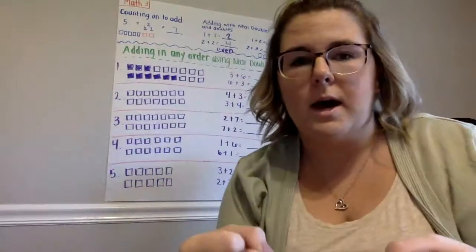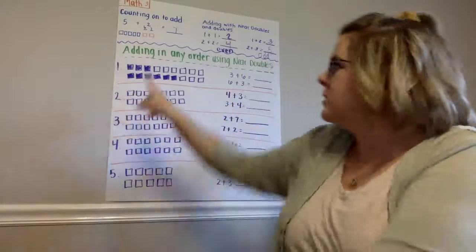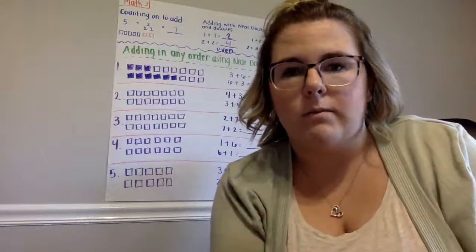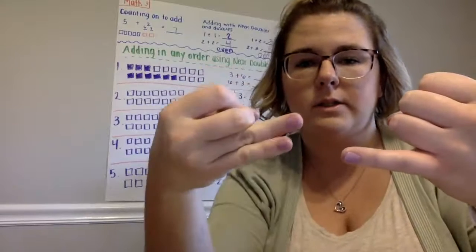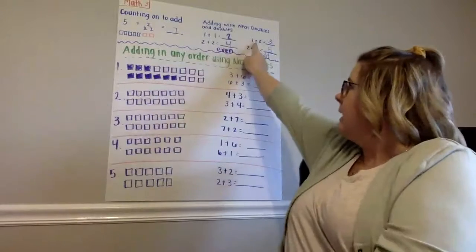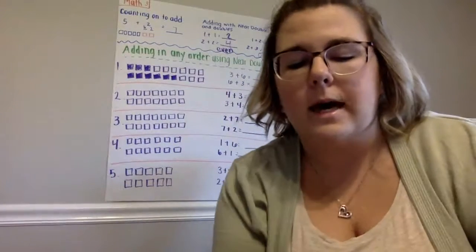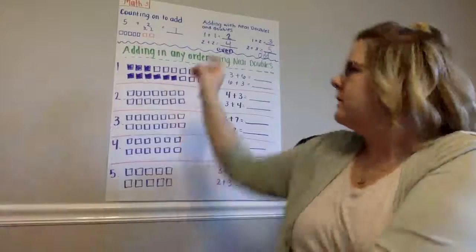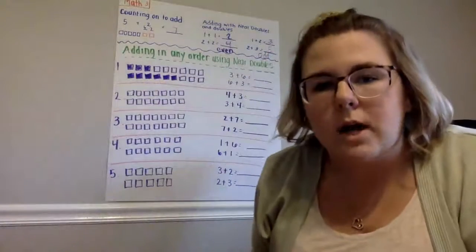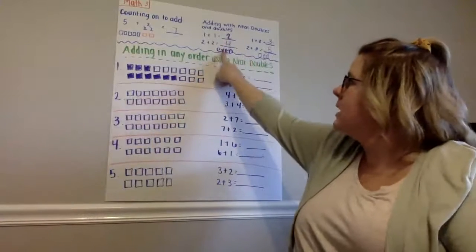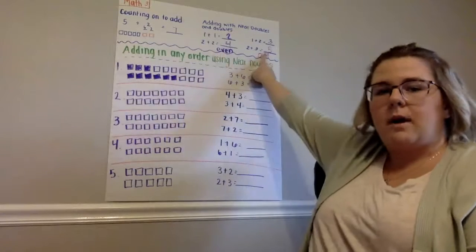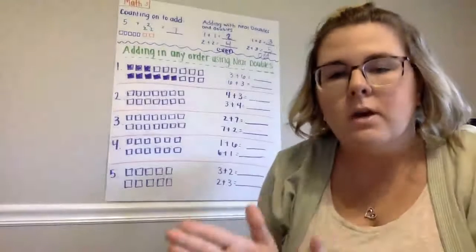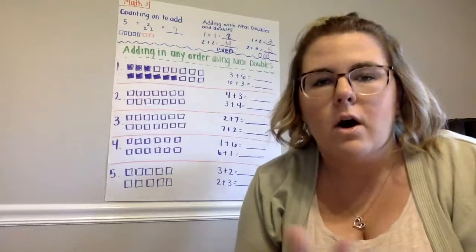And then we had 2 plus 2 and 2 plus 2 equals 4. Now, when we add with near doubles, we are just adding on 1 more. So we have 1 plus 2 equals 3. The last problem that we have is 2 plus 3 equals 5. Now, we also talked about how the doubles are even numbers and we talked about the near doubles are odd numbers. So 2, 4, 6, 8, 10 are even numbers. 3, 5, 7, 9 are odd numbers.